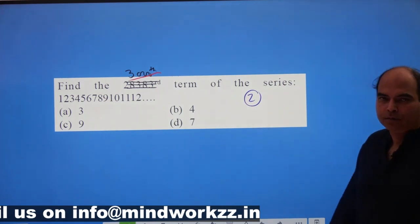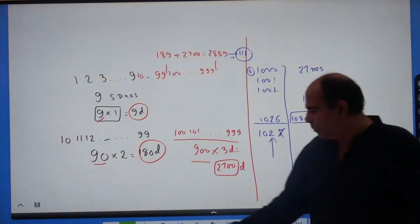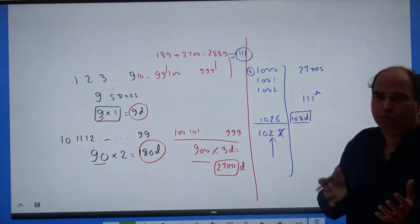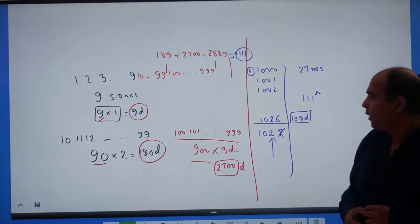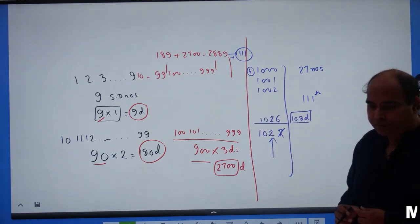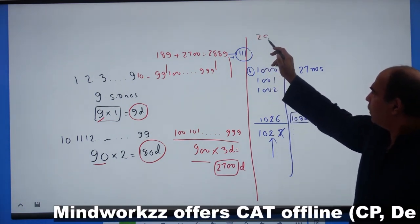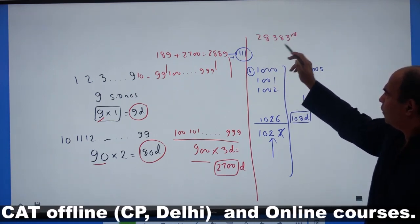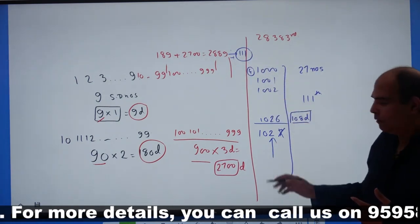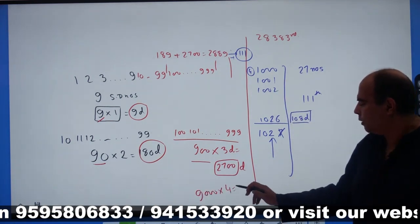That answer of 2 is not in the options since we changed the question. Now we need to solve for the original 28,383rd term using the same logic. The logic will differ only in the last part. For the 28,000+ range, you're adding about 20,000 more terms. Looking at four-digit numbers: there are 9000 four-digit numbers, each with 4 digits, giving 36,000 digits total.